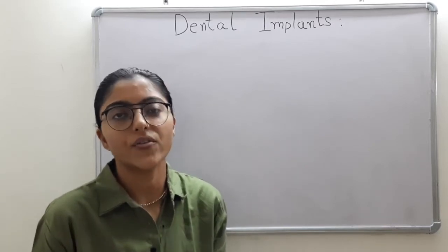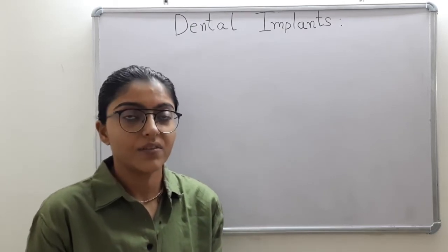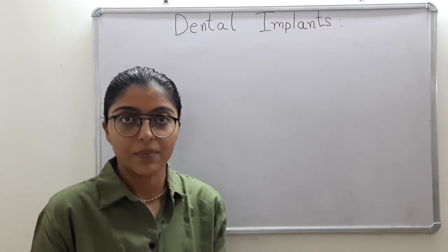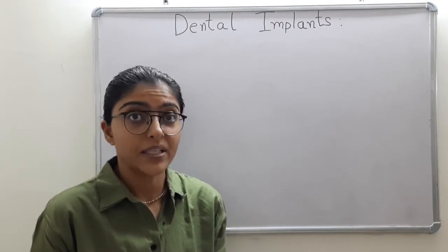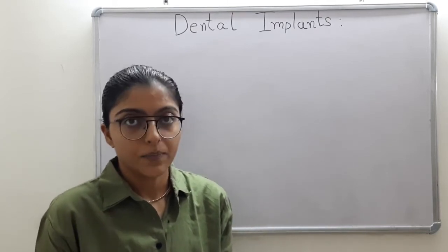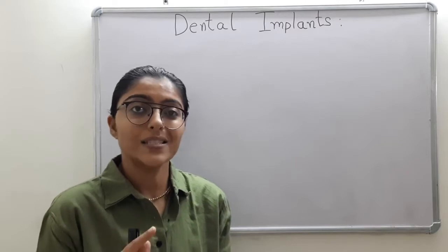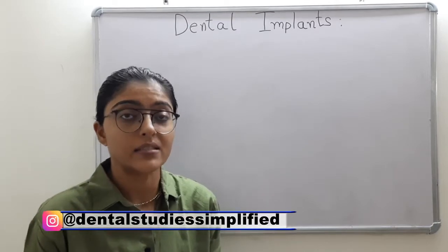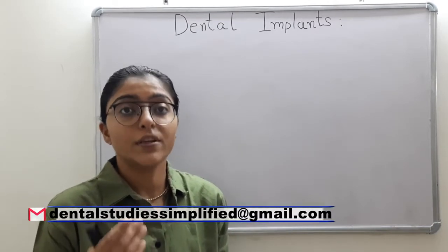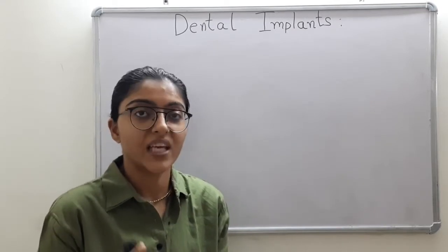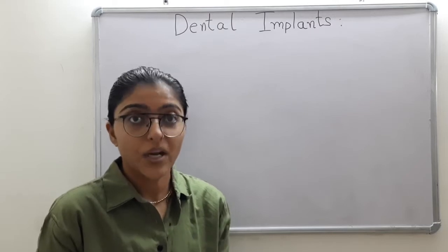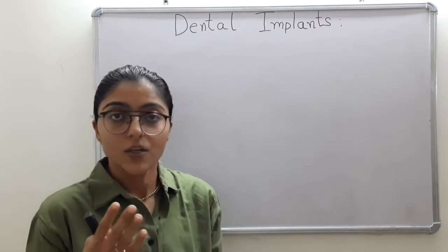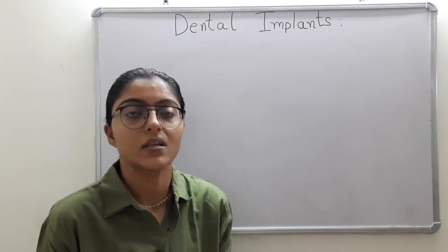Before we proceed, a quick recap of what we discussed in the previous video. We began with osseointegration, also known as secondary stability. After that we discussed primary stability and stability dip, and we also discussed bone implant contact BIC. After these terminologies we discussed Albrecht's criteria — four criteria to define or determine a successful implant. Then we discussed how to determine primary stability and secondary stability, with two common methods and two outdated methods.